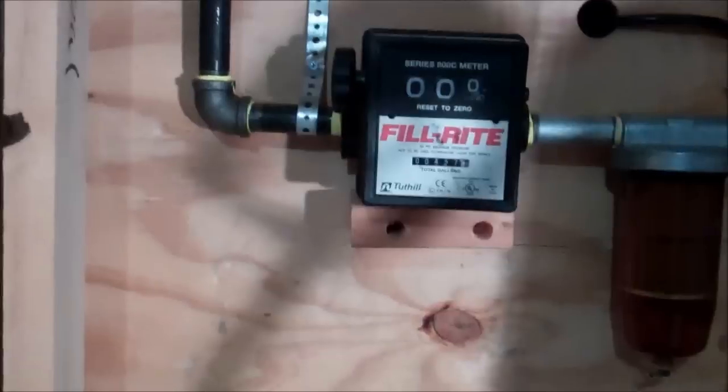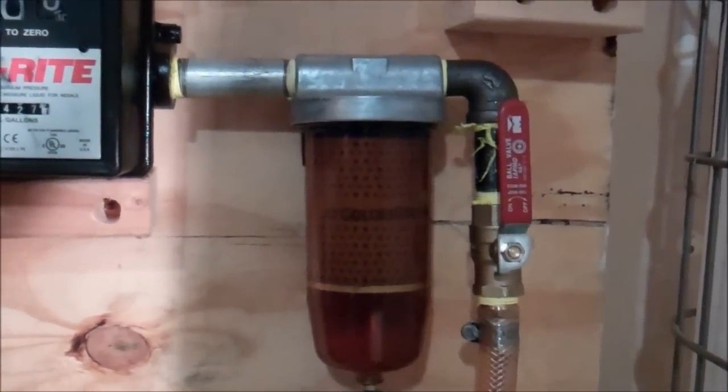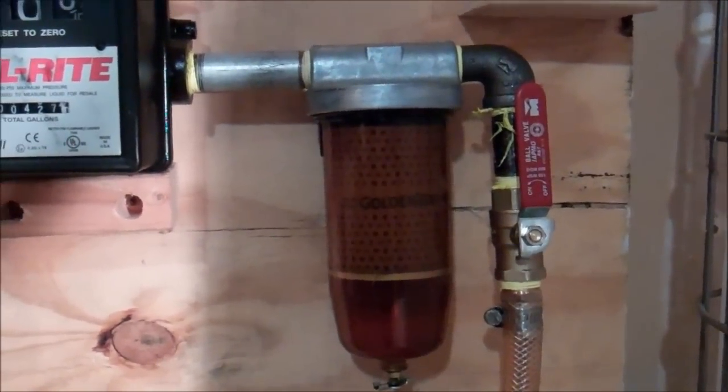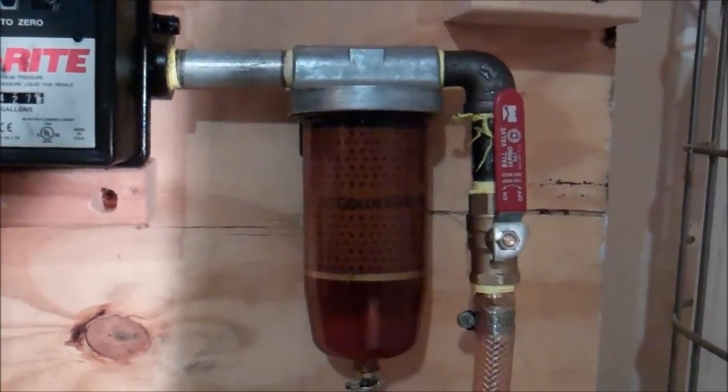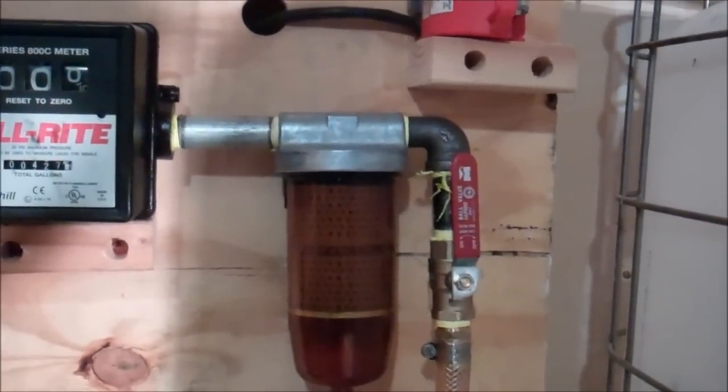Then we've got a fuel meter. And then last, it runs through our golden rod filter. We used a polyurethane hose that's reinforced.